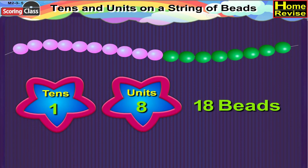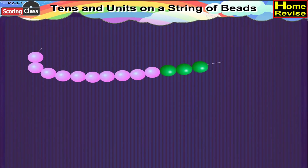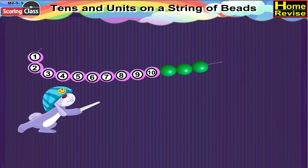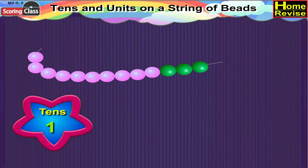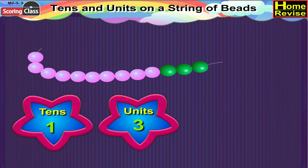In the next string, besides ten pink beads, three green beads are there. So it means it is one ten, three units, or thirteen.